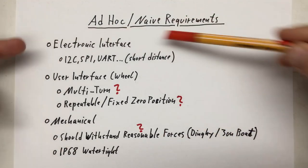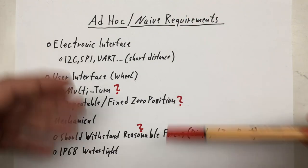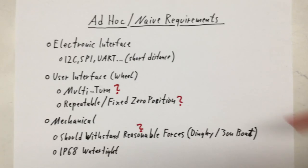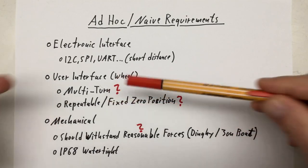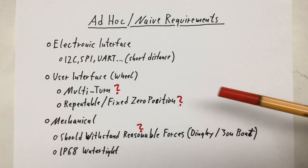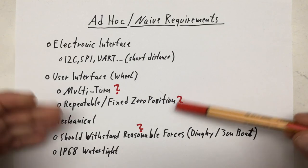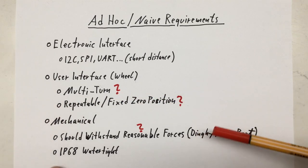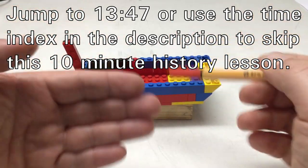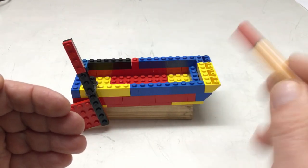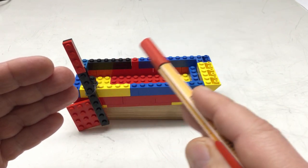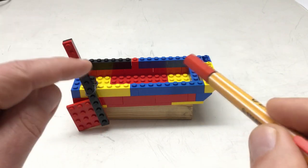However, while electronic interface and IP68 watertight are a given, does it really have to be multi-turn? Constructing a multi-turn wheel is a pain in the ass. And does it bring us really some advantages? And then repeatable fixed zero position. If you ever played a racing game at an arcade, there's nothing like repeatability or fixed zero position. And then of course the big questions. What is reasonable force? To answer the question for myself if I really want, respectively need, a multi-turn wheel, I went back in time and revisited the development of marine steering mechanisms. And that's exactly what we will do now.